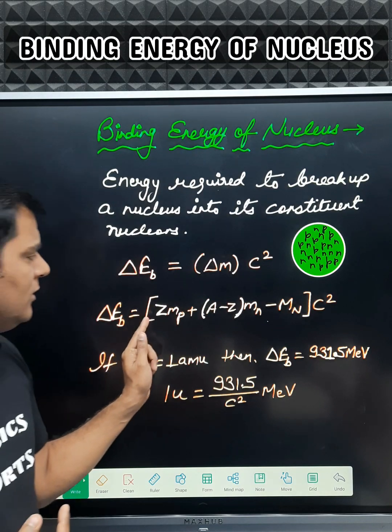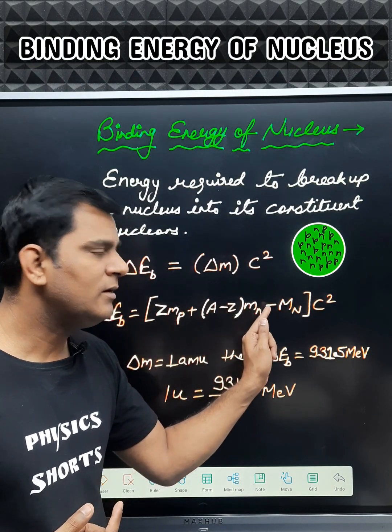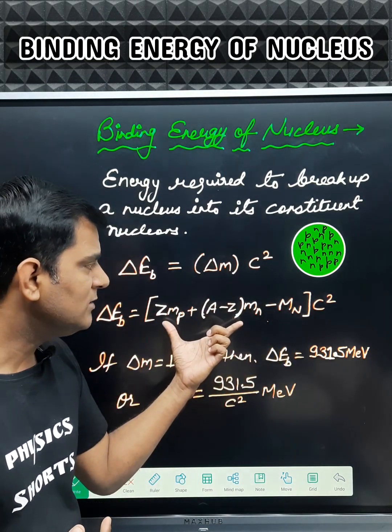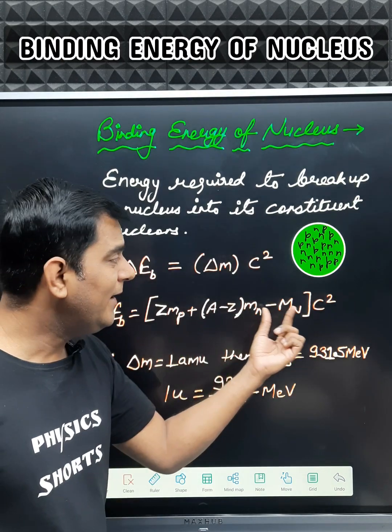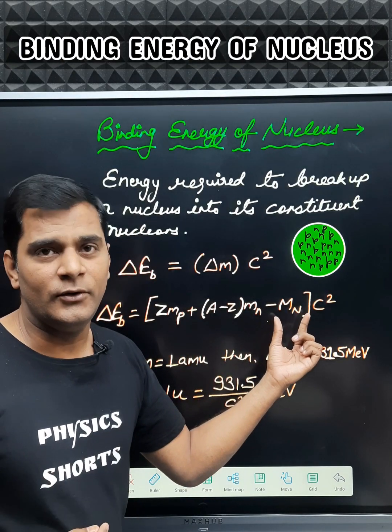We know that this mass defect is Zmp plus (A-Z)mn minus MN. It is the total mass of the constituent nucleons and the rest mass of the stable nucleus.